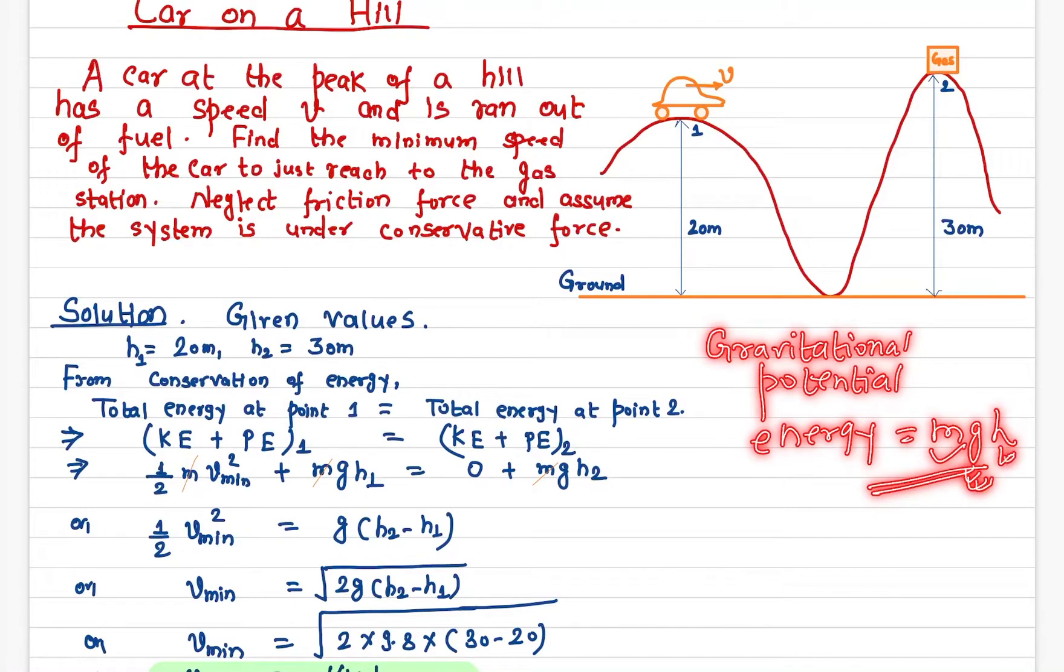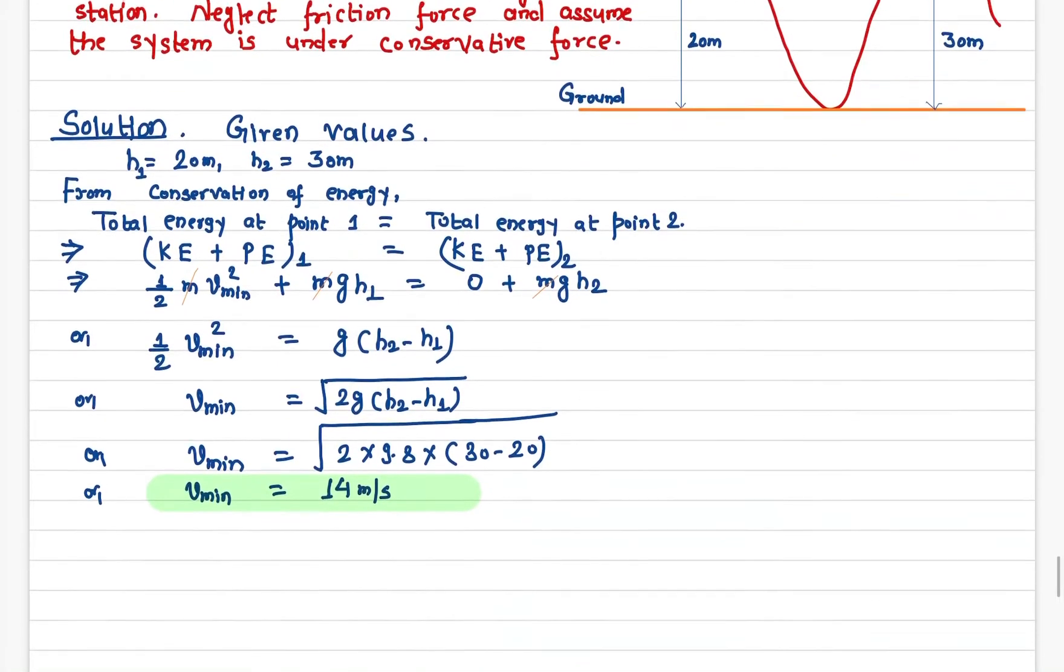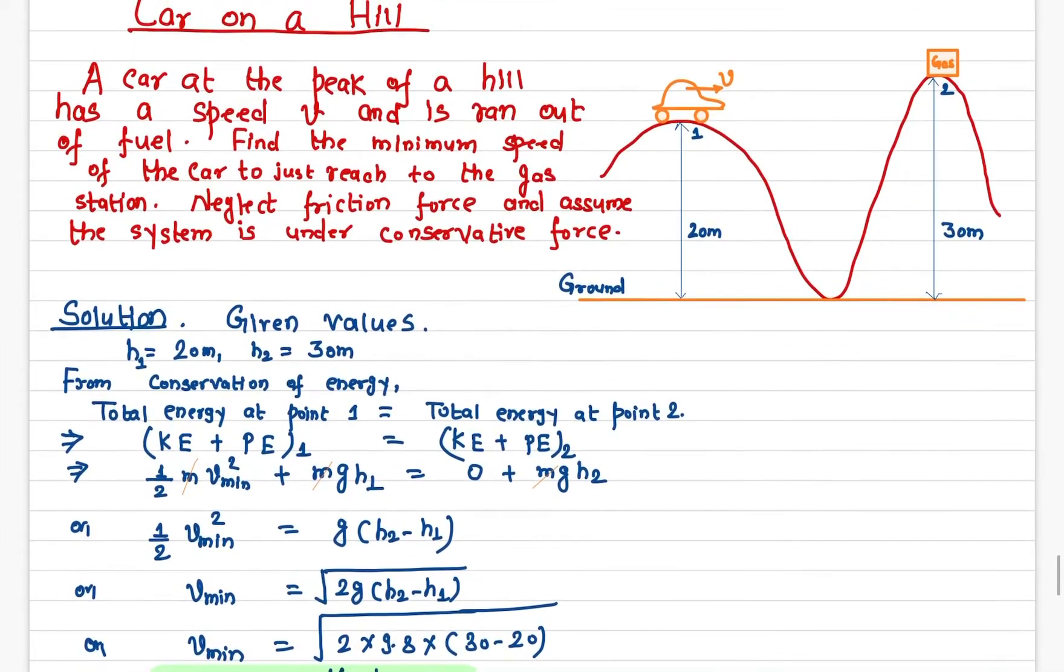The kinetic energy at point two is zero. Why is it zero? Because the car just makes it to the gas station, or just barely reaches the gas station. So there is no speed at all—it just gets there.